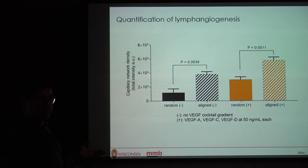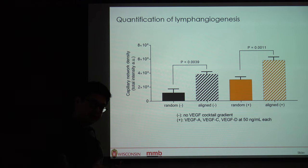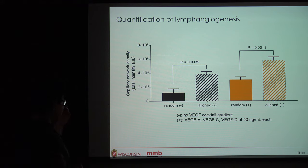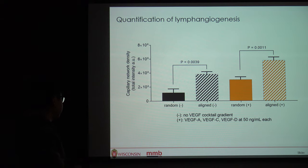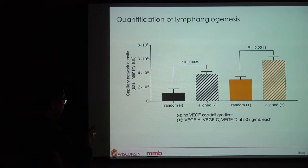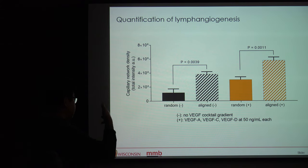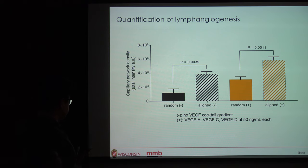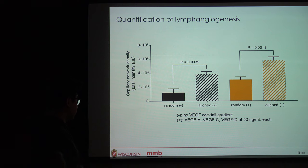When we do add a gradient to the matrices, we see a pronounced synergistic effect between biomolecular and biomechanical cues — growth factors attract the cells to grow in that region, but fiber alignment provides the directional path for capillary support. What's interesting is that even with added biomolecular cues in the random matrices, it still doesn't form as dense a network as compared to the aligned case without growth factors, potentially suggesting that alignment is more potent than the biomolecular cues alone.